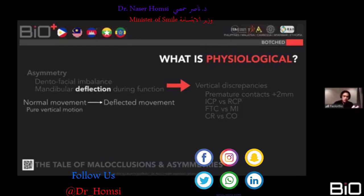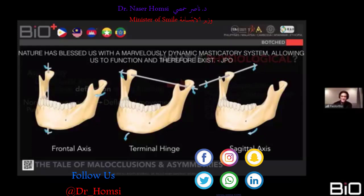When we talk about mandibular deflection, there's a normal movement and a deflected movement — the deflected movement being caused by a premature contact. Normal movement is pure vertical motion, as the Roth-Williams philosophy describes: purely up and down. The jaw can move along the frontal axis, terminal hinge axis, and sagittal axis. As has been said, nature has blessed us with a marvelously dynamic masticatory system — and we're not dealing with something static when talking about asymmetry.